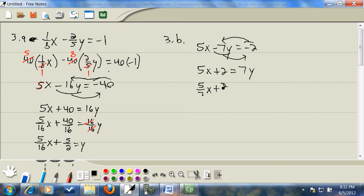And divide that by seven. This pen is... there it goes. Divide the seven by seven. Sevens cancel there. So we got five sevenths x plus two sevenths. And over here we got y. And that's our answer.